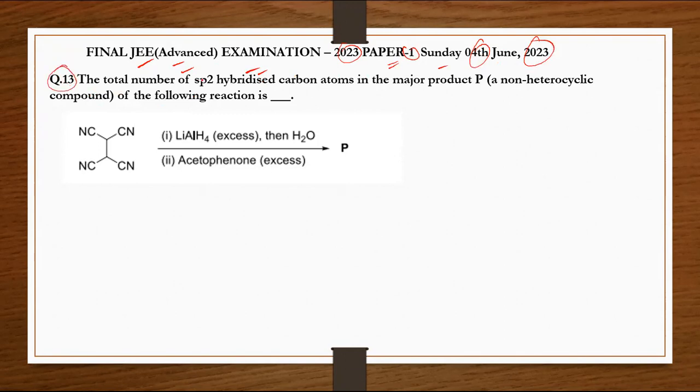The total number of sp2 hybridized carbon atoms in the major product P of the following reaction - we need to find the total number of sp2 hybridized carbons in the main compound.